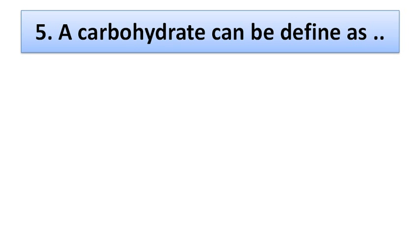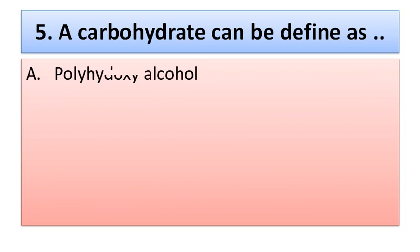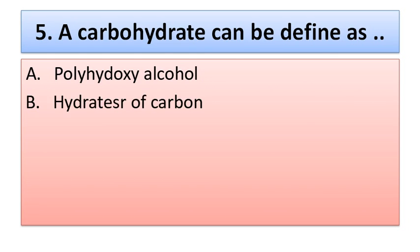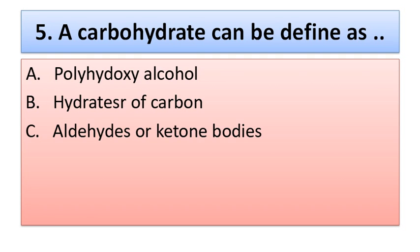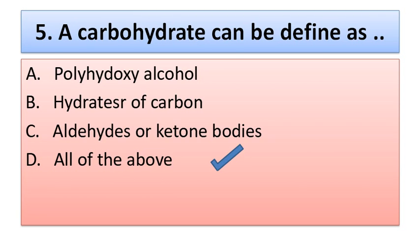Question number five: a carbohydrate can be defined as — option A: polyhydroxy alcohol, option B: hydro esters of carbon aldehydes or ketone bodies, option C: all of the above. The correct option is option D, all of the above.